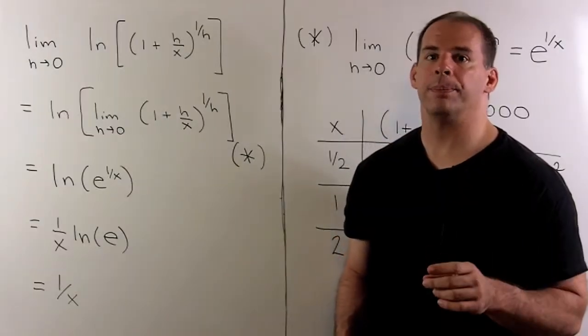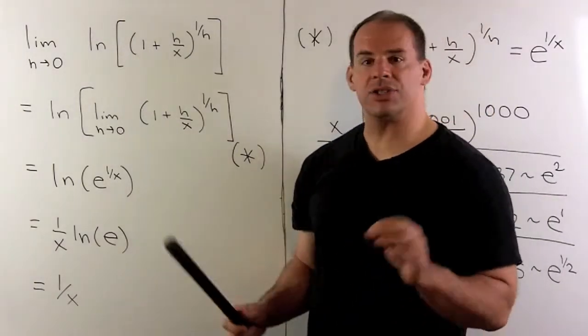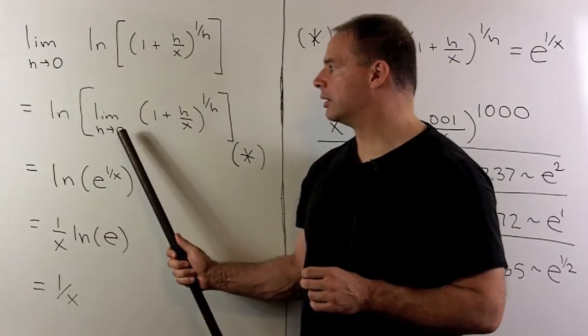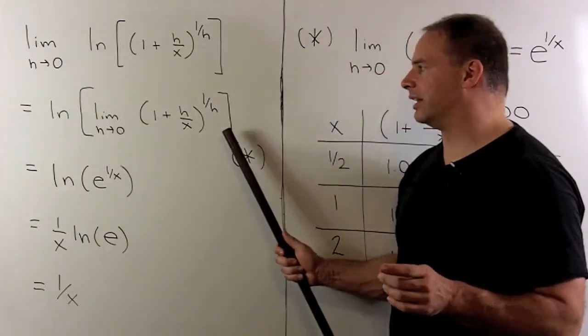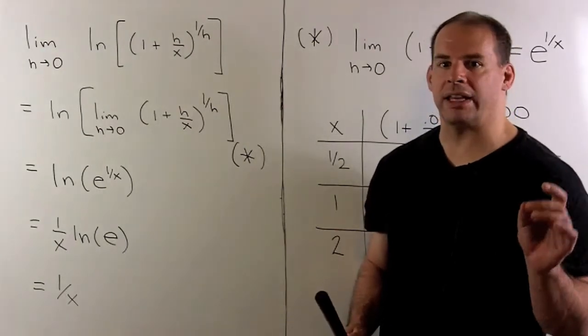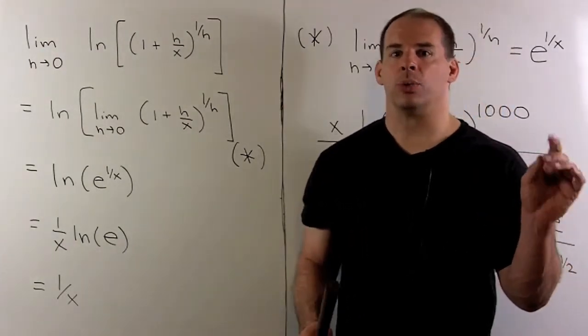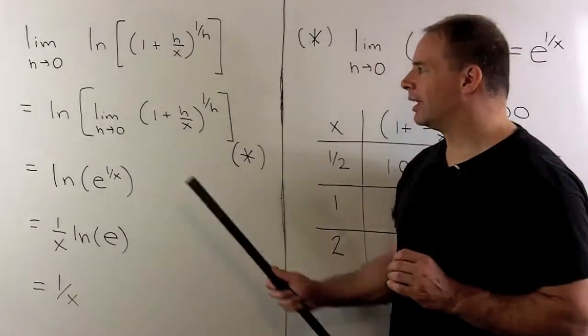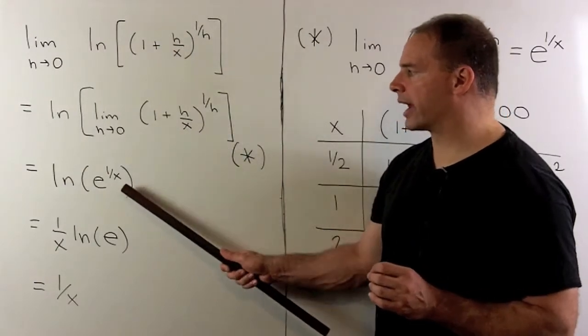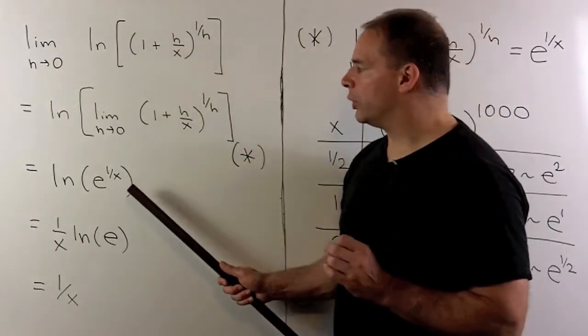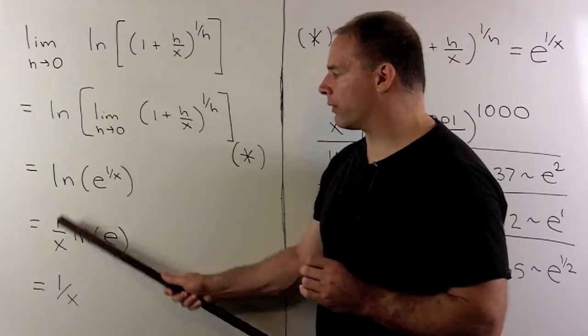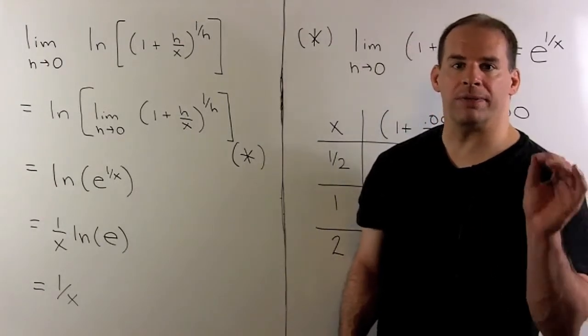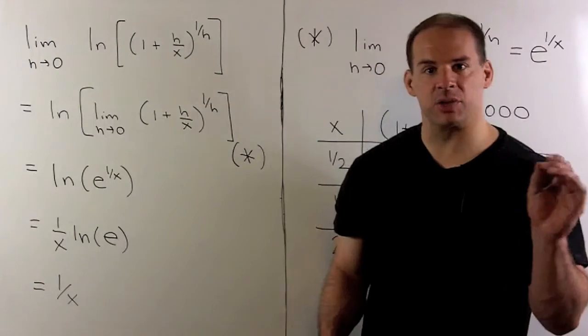For our next step, we note natural log is continuous on its domain. So you can push this limit through to the inside. To compute the inside limit, we need more technique than we get in calculus. So at the end, we'll just check at a few points. Now, the claim will be that this limit is equal to e to the 1 over x. With that, we could use our exponent rule to bring the 1 over x down in front. Then natural log of e is equal to 1. So we finish up with 1 over x as expected.